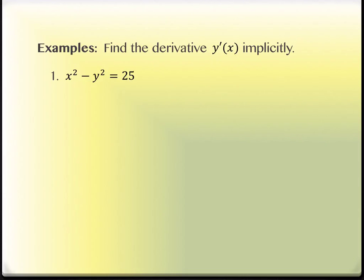Does anybody know what this is an equation of? If it were a plus, it would be a circle — it's a hyperbola. This is a hyperbola. They look like double parabolas: the U-shape up and down or the U-shape left and right. Definitely not a function — if you draw a line through it, it's going to cross the graph twice in most places.